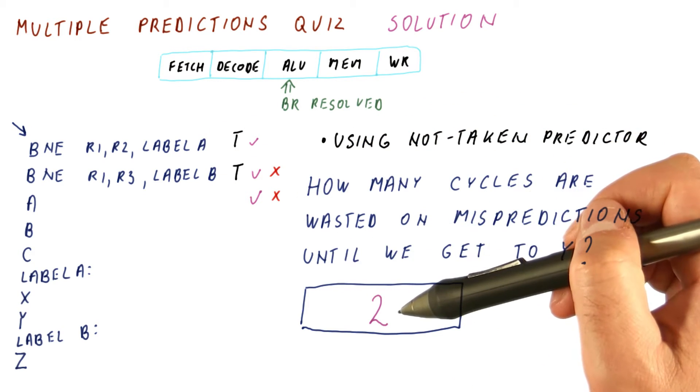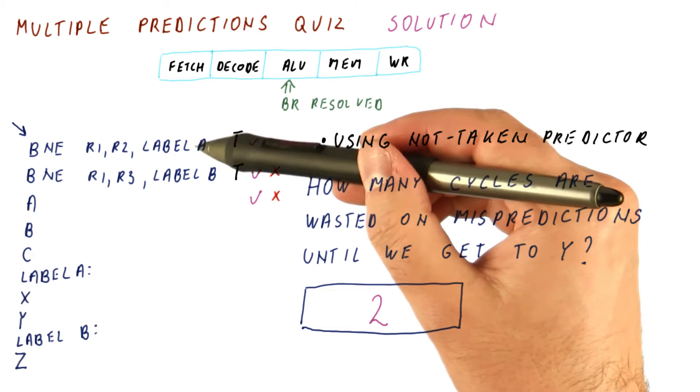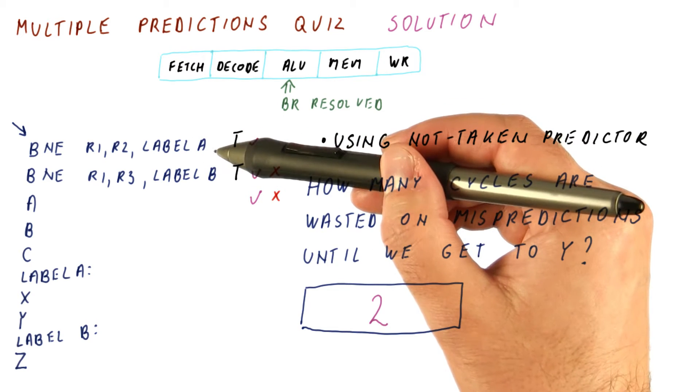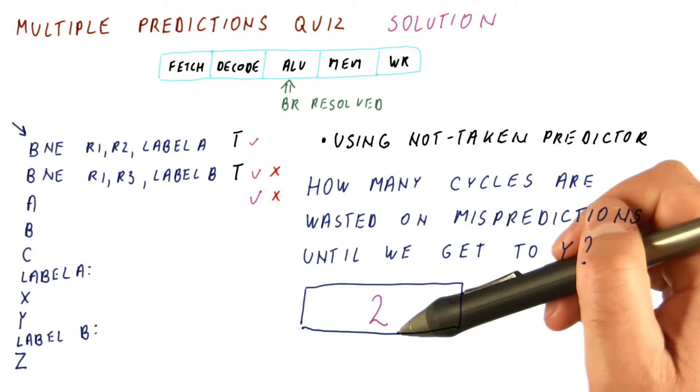However, the penalty is unaffected. So when we mispredict a branch, we just need to worry about getting on the correct path and we pay a penalty for that.